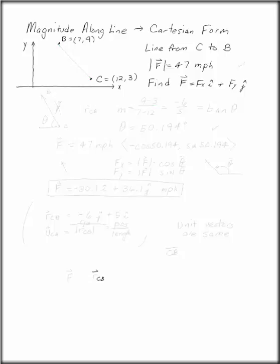Magnitude along a line into Cartesian form. We have two points, B and C. C is at 12,3, B is at 7,9, and there is a line that goes from C to B.